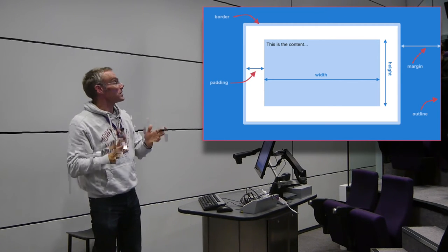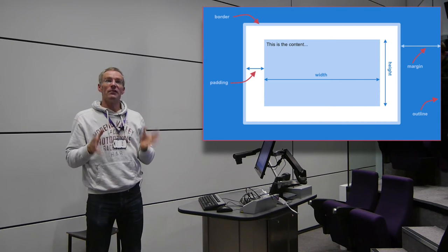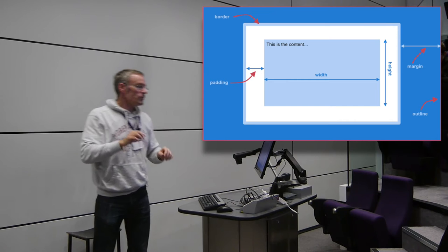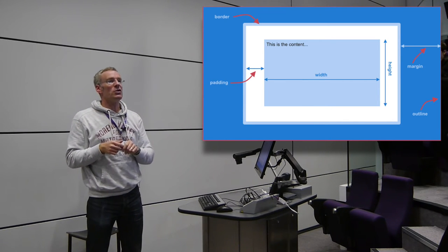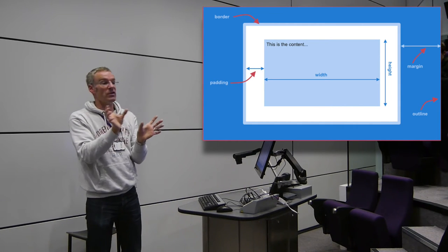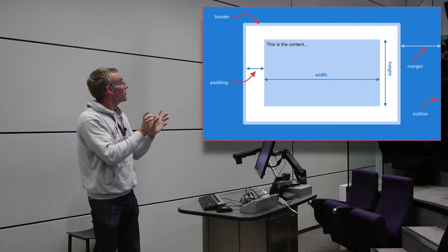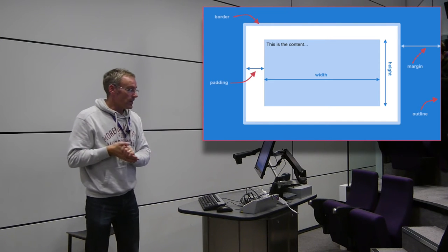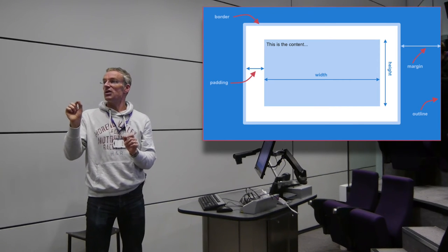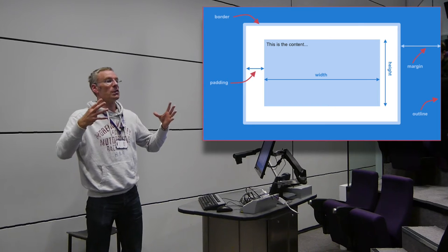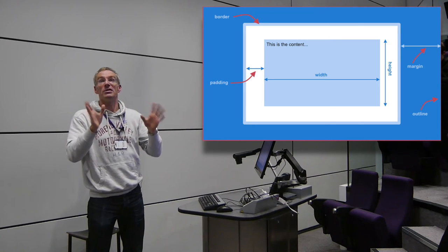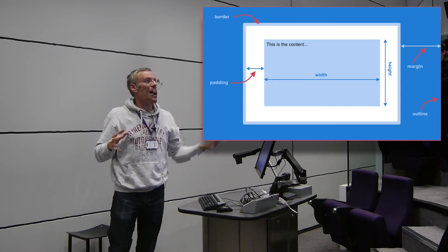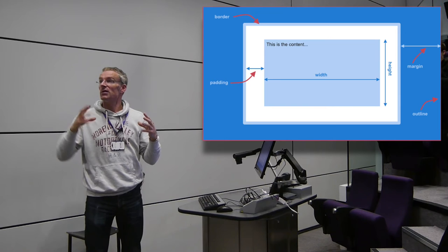Margins specify the minimum space around an element, which confuses people when two elements with margins interact. Around the margin space you have the outline property - I've never used it in a final design, only for working out how elements are positioned. A useful debugging tool: if you give the outline a one-pixel width it doesn't increase the size of the element at all, so it has no effect on layout.